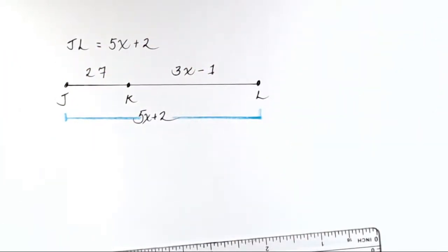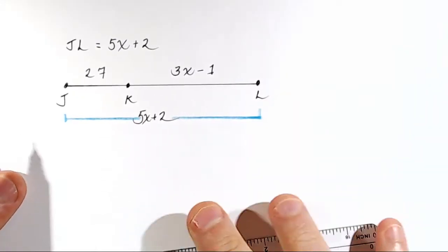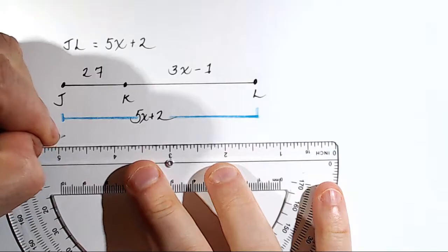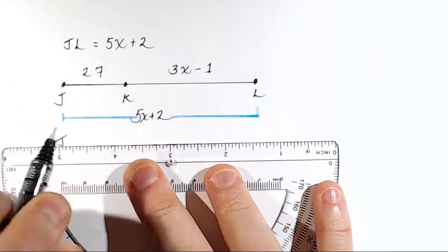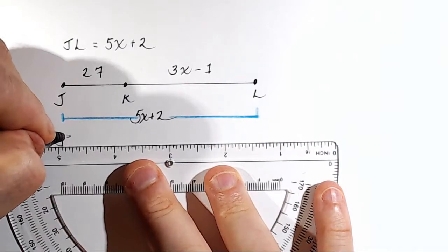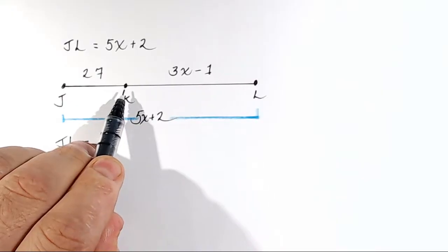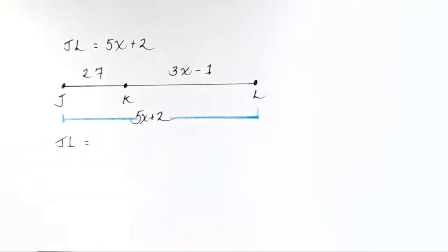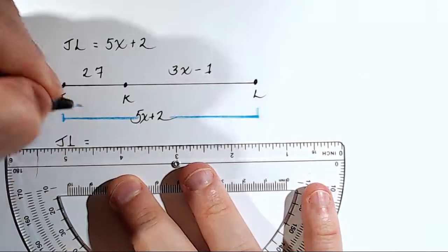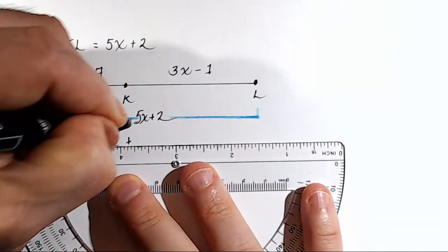Okay, so what does that mean we do? We are asked to find what JL is. So they want to know the total distance. Okay, so what does JL equal? You can say, well, JL equals 5X plus 2. But that is not the only thing that JL equals. JL also equals distance JK plus distance KL. Okay, so we'll say JL equals JK plus KL.